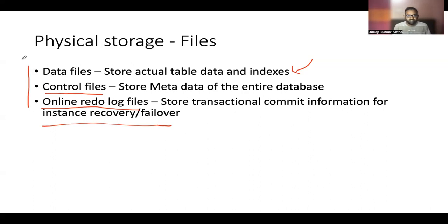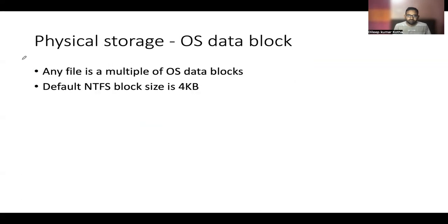So this is how the physical storage looks like. If you go into more detail, how are any files stored? If you take any text file, audio, or video file, they are stored in multiples of OS data block. It is underlying file system specific how much each data block is. So any file will be a multiple of that OS data block. For example, for the NTFS file system block size is 4KB. Any file is a multiple of this 4KB. This is the OS data block.